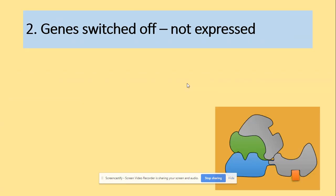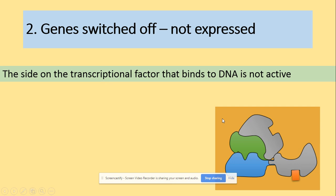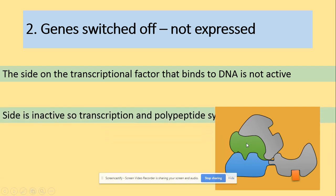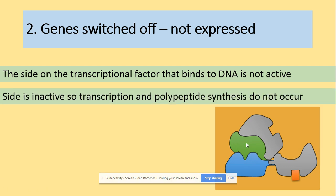We can also switch the gene off. In this situation, the complex will not start protein synthesis because the site on the transcription factor that binds to DNA is not active — the inhibitor molecule is still present. So protein synthesis cannot take place. That was one of the aspects using estrogen.